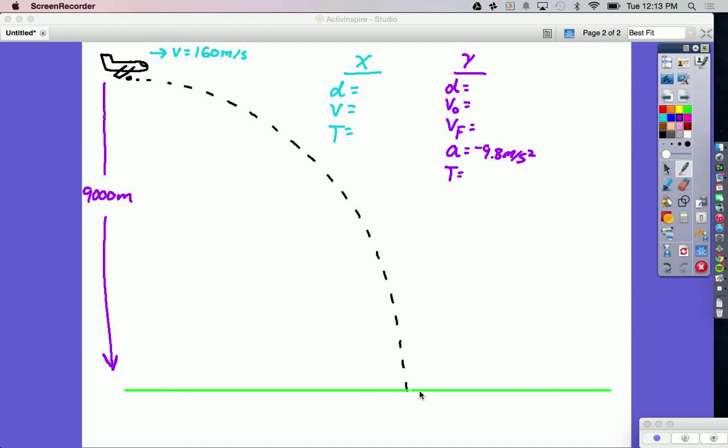Now we've got to put our numbers in the correct spots. We know that the plane and bomb are moving initially at 160 meters per second, so that is my X speed. We know that it's going to fall 9,000 meters, so negative 9,000 meters in the Y. We know it's got no up and down speed initially because it's a horizontal thing, so the initial speed in the Y is 0 meters per second. Acceleration in the Y is always negative 9.8 meters per second squared.